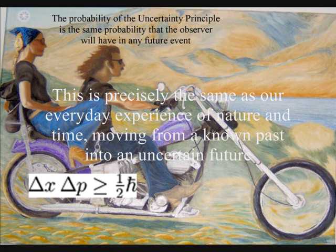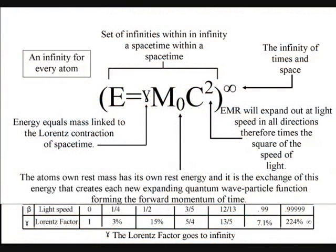Therefore, Heisenberg's uncertainty principle and the probability of the wave function are the same uncertainty that we have with any future event, forming an infinity of possibilities at every point in space and every moment in time.